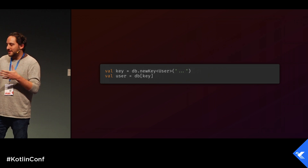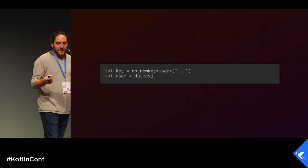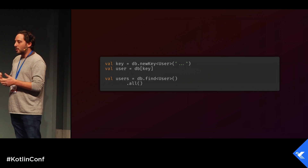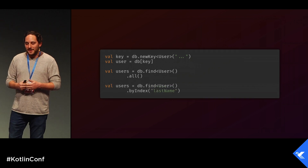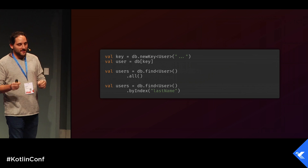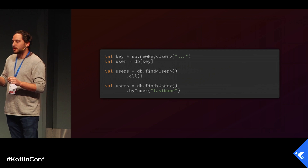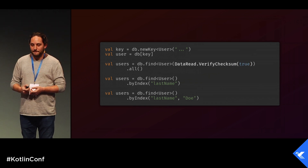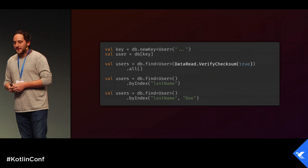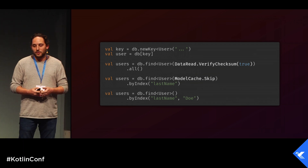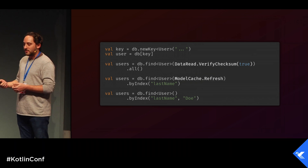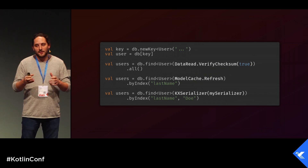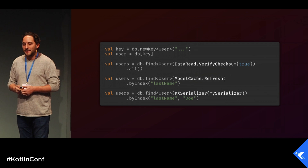Let's see how you query the database. The simplest operation is just get — you get the key from the ID and query the database with that key. Maybe you want to find all users — it's a Kotlin DSL, as simple as that. Maybe you want to find all users ordered by an index — an index is used both to query and to order. Maybe you want to query by index value. You can also pass query options, such as verifying the checksum, skipping the cache entirely, refreshing the model from the database, or specifying a serializer for the returned model.